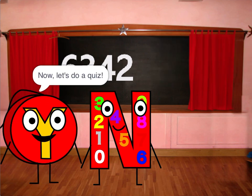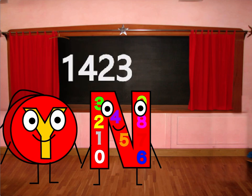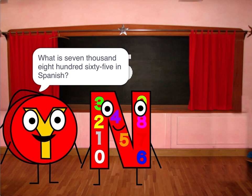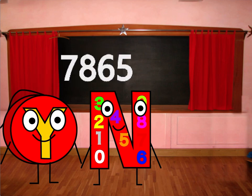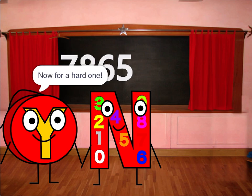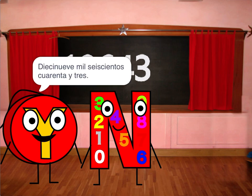Now let's do a quiz. What is one thousand four hundred twenty-three in Spanish? Mil cuatrocientos veintitrés. What is seven thousand eight hundred sixty-five in Spanish? Siete mil ochocientos sesenta y cinco. Now for a hard one: what is nineteen thousand six hundred forty-three in Spanish? Diecinueve mil seiscientos cuarenta y tres.